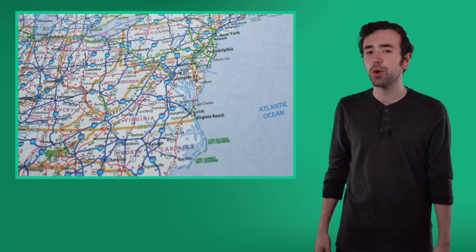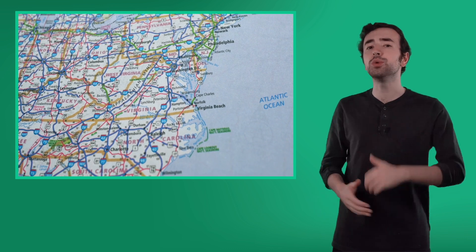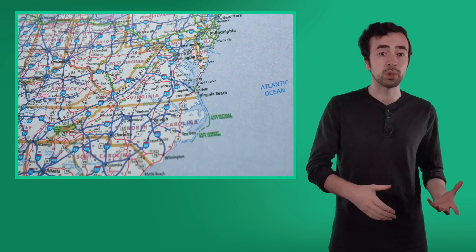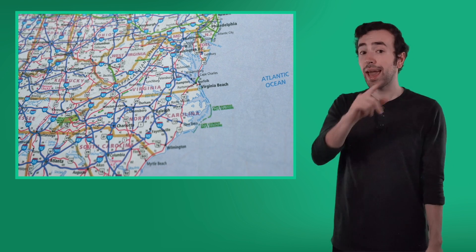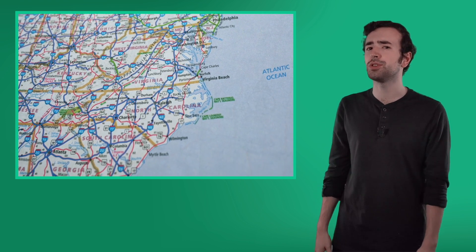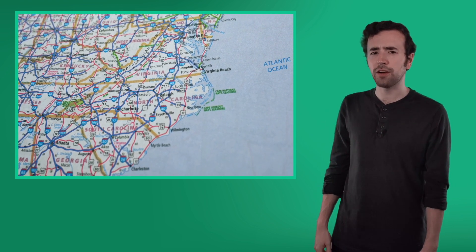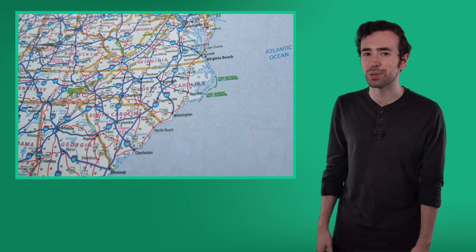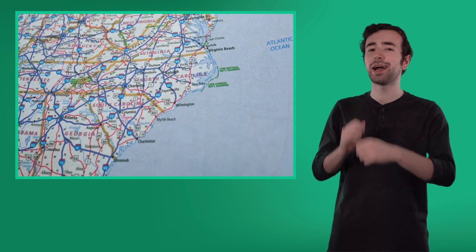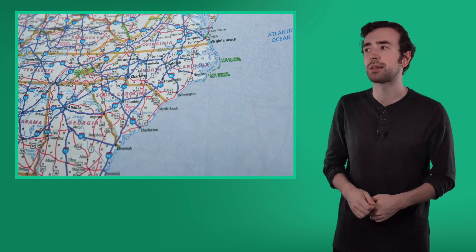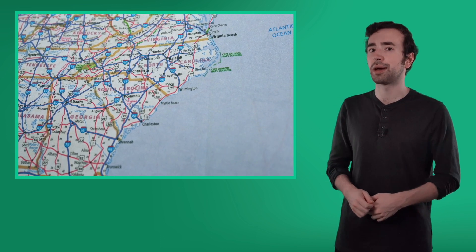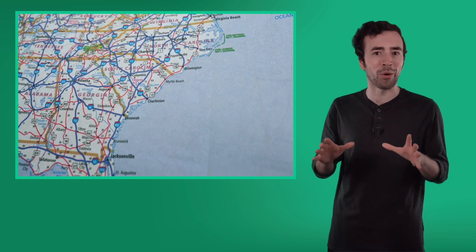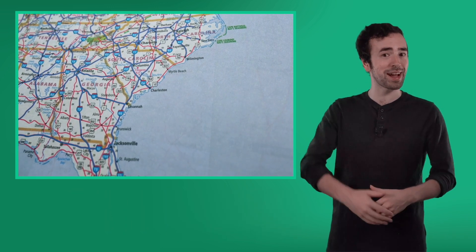Now you know that road maps are a type of map used by travelers. You know that they include symbols to help travelers navigate, and you know how to use those symbols to do your own navigating. Have fun practicing navigating using road maps and symbols. I'm going to keep navigating my way through the rest of the South using road maps and GPS. I'll see you next time in the Midwest, where we'll be using even more kinds of maps. See you there!